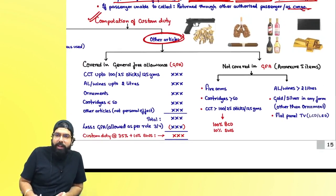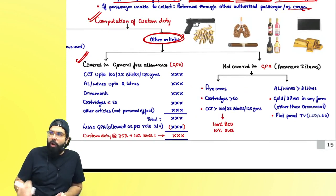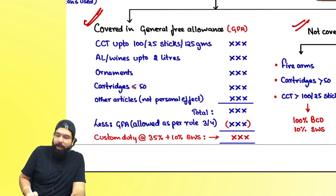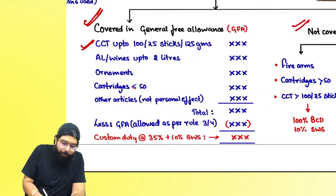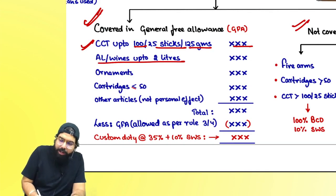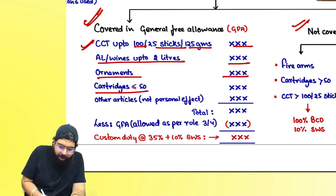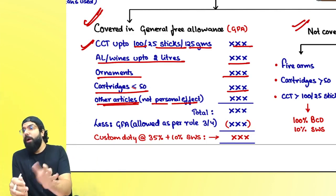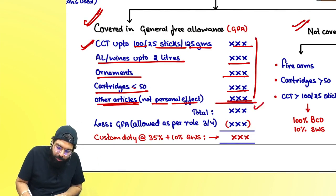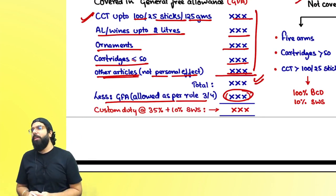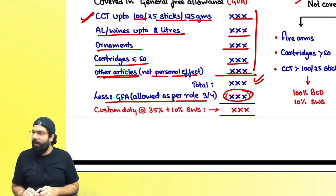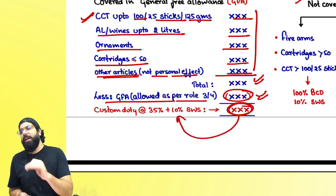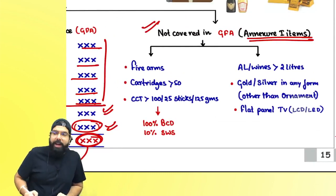For other articles in your baggage, the officer will check if they can be cleared under the general free allowance or if they are annexed items — general free allowance will not apply to annexed items. The officer will list all items: cigarettes up to 100, cigars up to 25, and tobacco up to 125 grams are allowed in general free allowance; alcoholic liquor up to 2 liters is allowed; ornaments are allowed; cartridges up to 50 are allowed. The general free allowance under rule 3 is 50,000 and rule 4 is 15,000. On the amount exceeding the GFA, you pay 35% plus 10% social welfare surcharge, which is 38.5%.